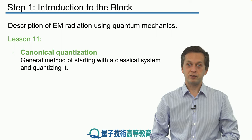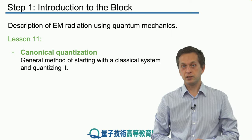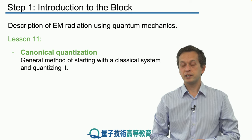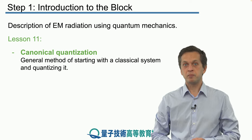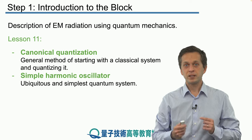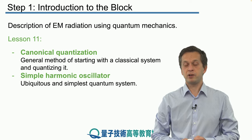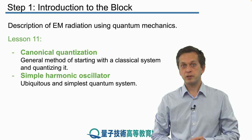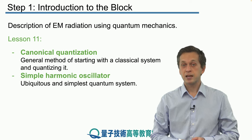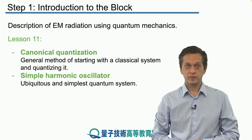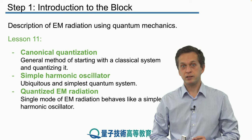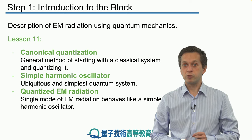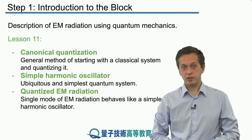We're going to begin lesson 11 with discussing canonical quantization. This is a general procedure that allows us to start from a classical system and quantize it, and we will make precise exactly what this means. Then we will apply this procedure of canonical quantization to an example of a simple harmonic oscillator, a ubiquitous system that appears everywhere in classical mechanics as well as quantum mechanics. We will solve the problem and then immediately apply it to quantize electromagnetic radiation, because a single mode of quantum radiation can be treated as a simple harmonic oscillator.